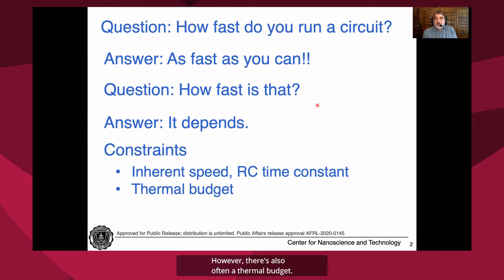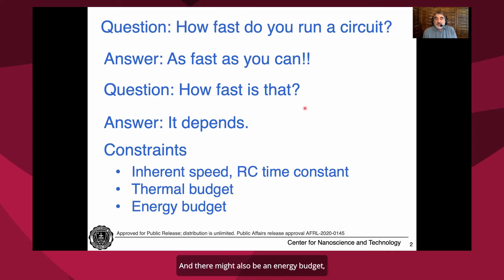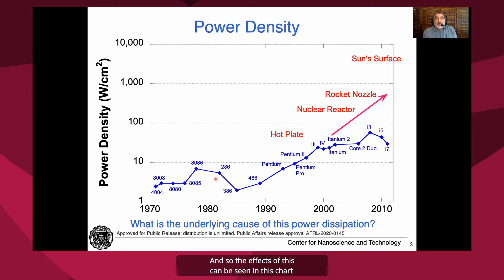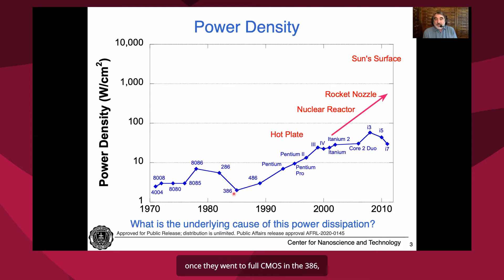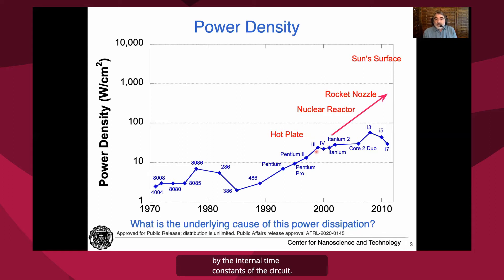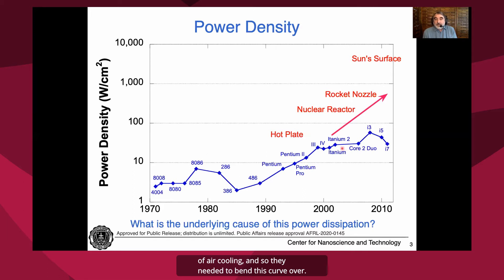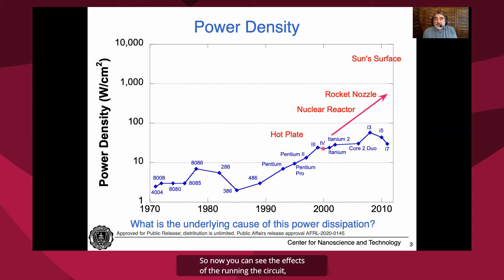However, there's also often a thermal budget. If you run the circuit too fast, you might exceed the amount of cooling you can provide. There might also be an energy budget. The effects of this can be seen in the chart of Intel microprocessors over time. Once they went to full CMOS in the 386, power per unit area went up exponentially through the late 80s and 90s as circuits were run as fast as possible by internal time constants. Around 2000, they realized they were approaching the limits of air cooling, so they bent this curve over using techniques such as multi-core or dark silicon — running circuits constrained by external thermal limits rather than internal delays.